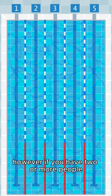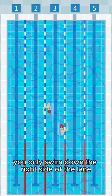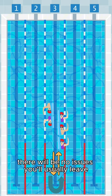However, if you have two or more people, you'll circle swim. You only swim down the right side of the lane. Even if you have five people in your lane, there will be no issues. You'll usually leave five seconds after the person in front of you goes.